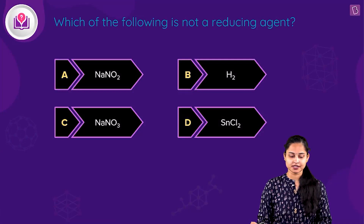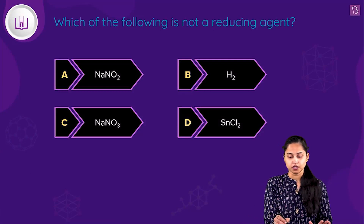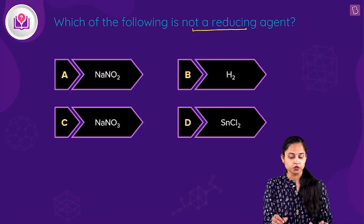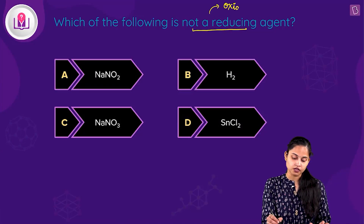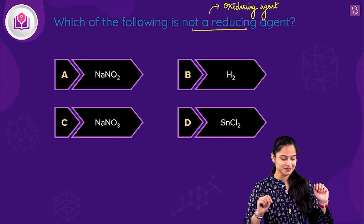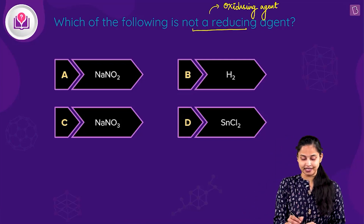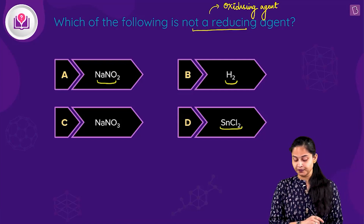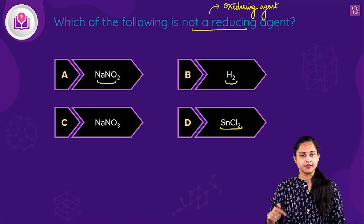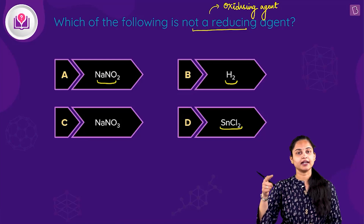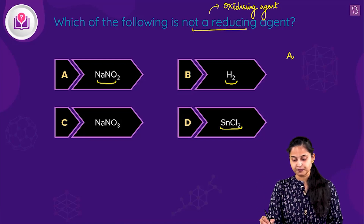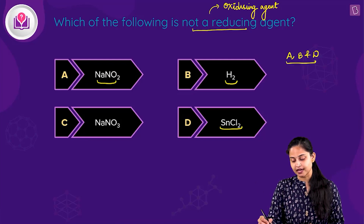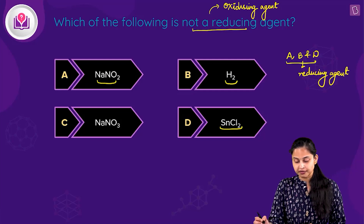The question asks which of the following is not a reducing agent — meaning it is an oxidizing agent. Options A (NaNO₂), B (H₂), and D (SnCl₂, stannous chloride) themselves get oxidized and act as reducing agents. Sodium nitrate (NaNO₃) acts as an oxidizing agent.